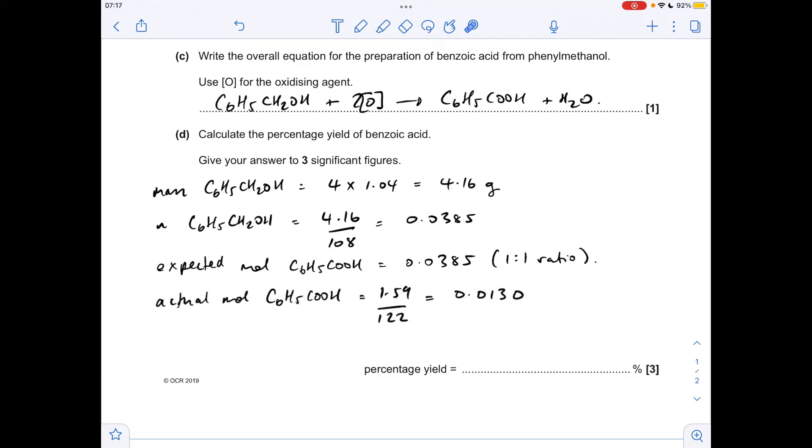Dividing the actual over the expected and multiplying by 100, we get a percentage yield to three significant figures of 33.8. The mark scheme for this question did allow 33.9 for some slight rounding.